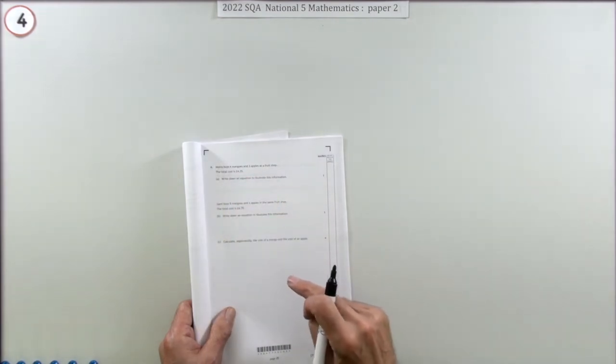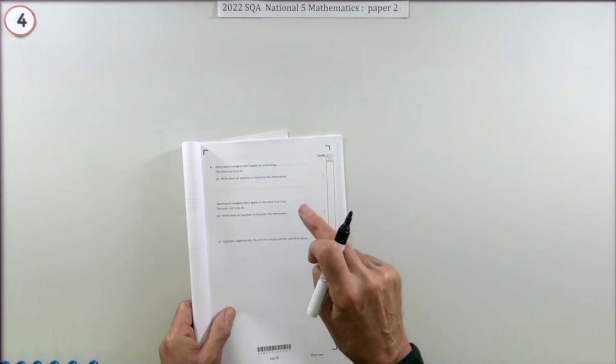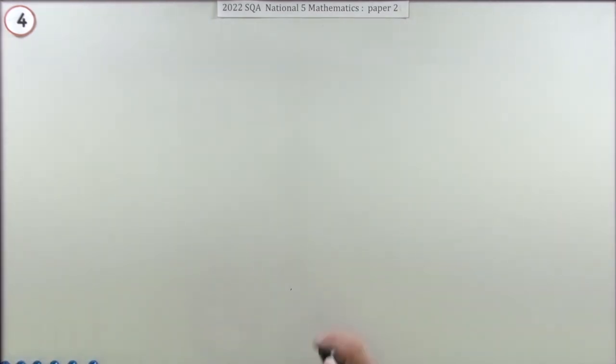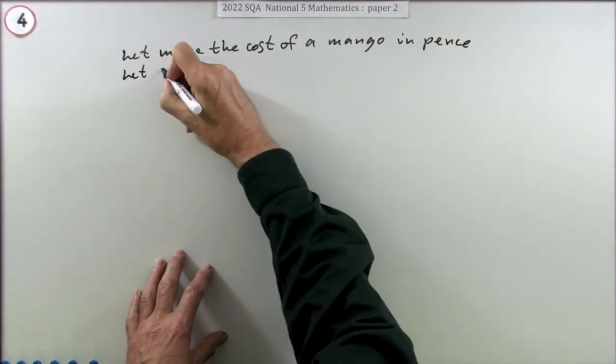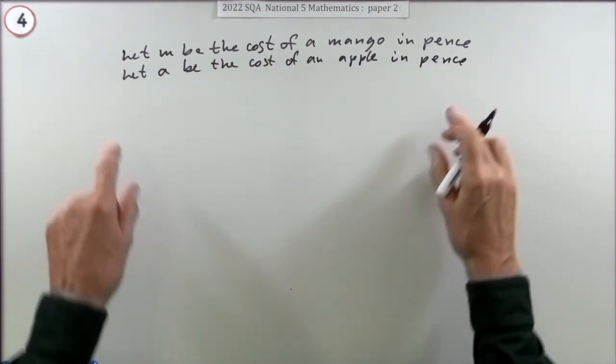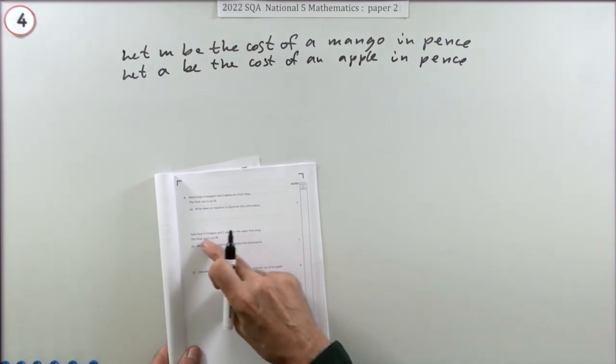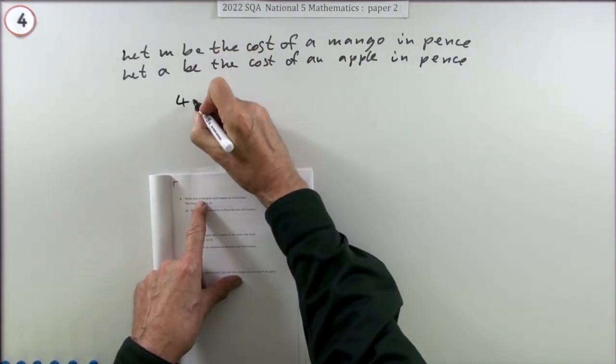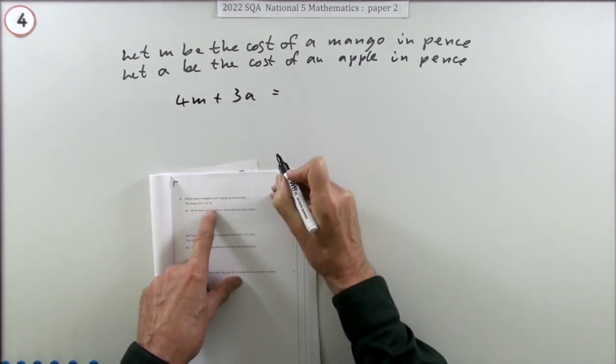There's no variables mentioned, so you have to introduce your own variables and choose an appropriate unit. That's got £4.25, to the decimal point individually they probably cost less than a pound, so I'll go for pence. Let m be the cost of a mango in pence, let a be the cost of an apple in pence.